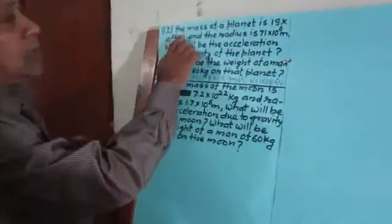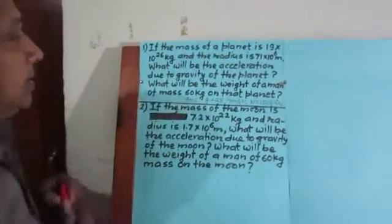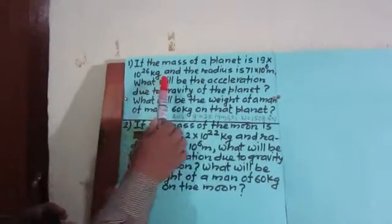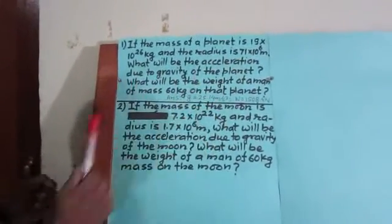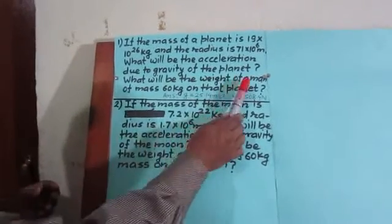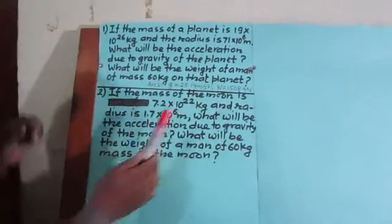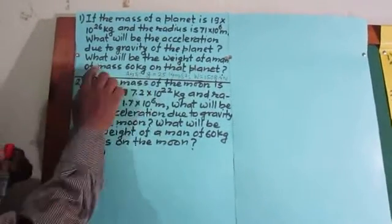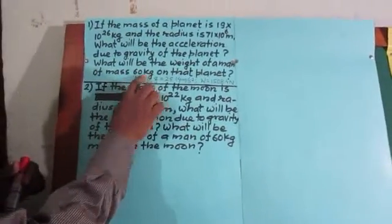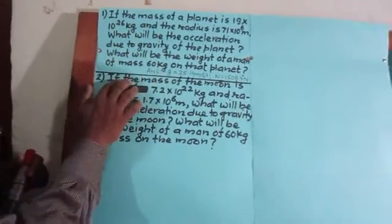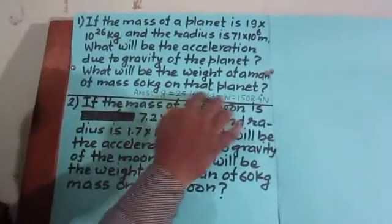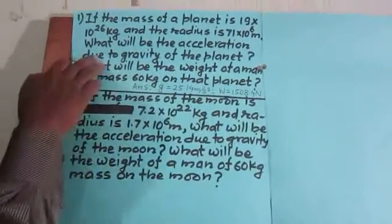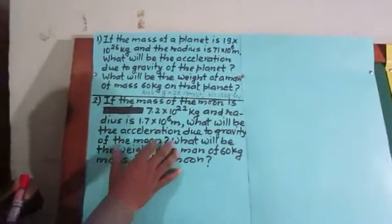Number one: if the mass of a planet is 19 × 10²⁶ kg and the radius is 71 × 10⁶ meters, what will be the acceleration due to gravity of the planet? What will be the weight of a man of mass 60 kg on that planet? There are two questions: one is acceleration due to gravity (small g) and the other is weight of the man. This problem is already solved and the results are given.